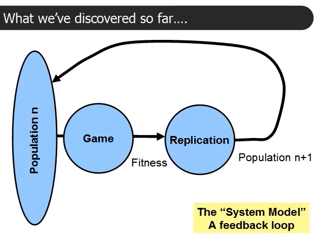What we see here is a feedback loop with a high degree of positive feedback, which means it has explosive growth. The growth of populations is explosive, and the controlling element in this feedback loop is the game. The nature of the game will drive the population toward its eventual end.